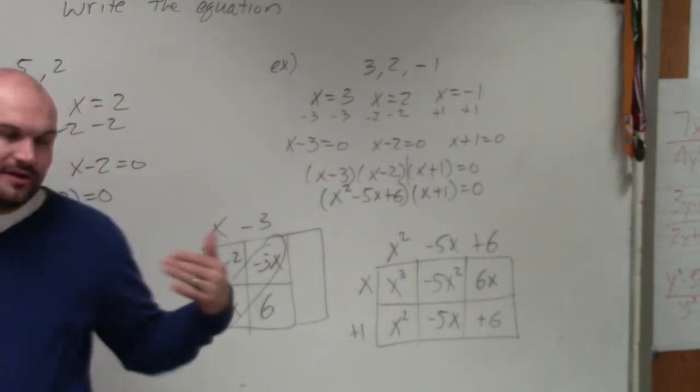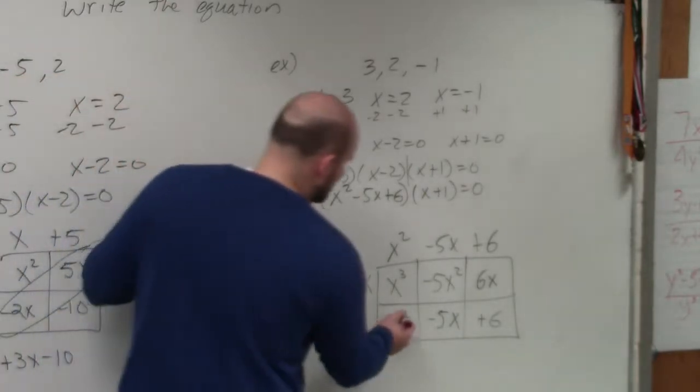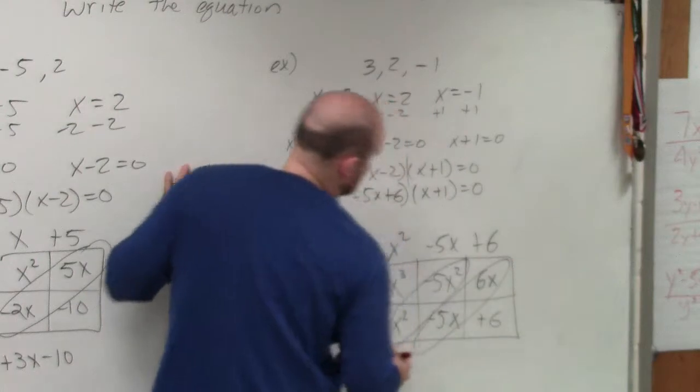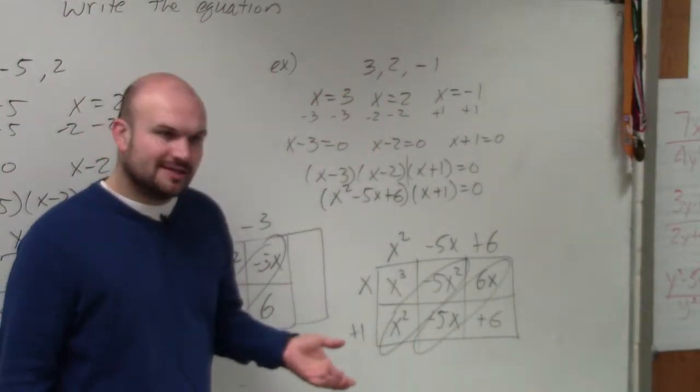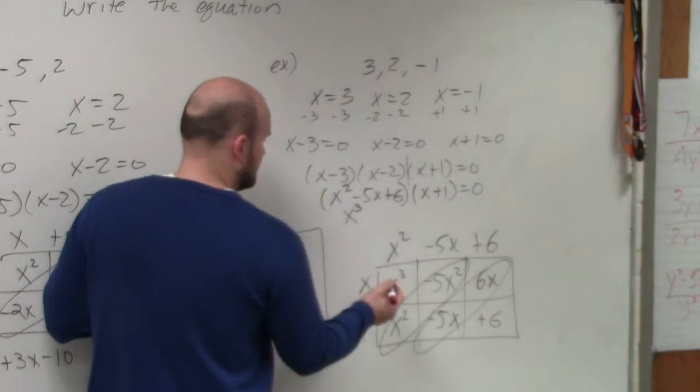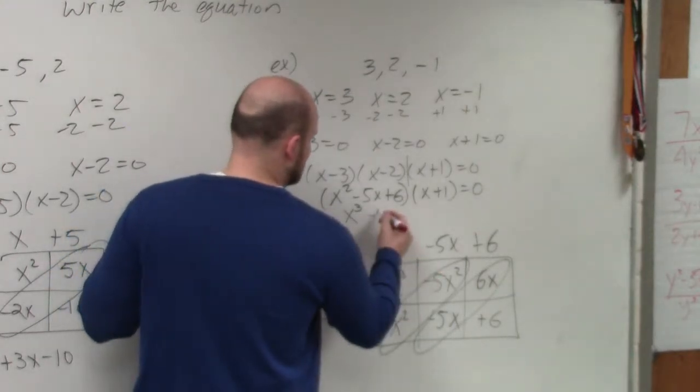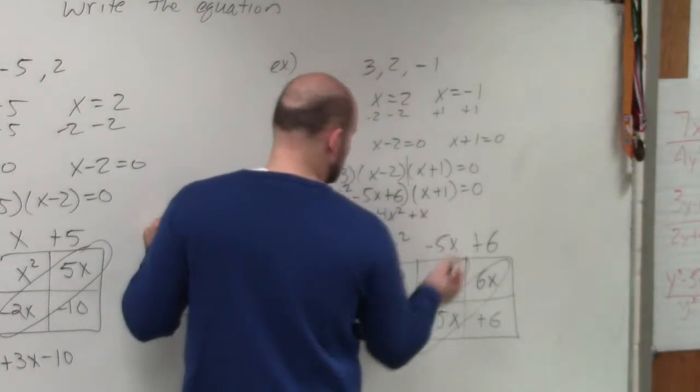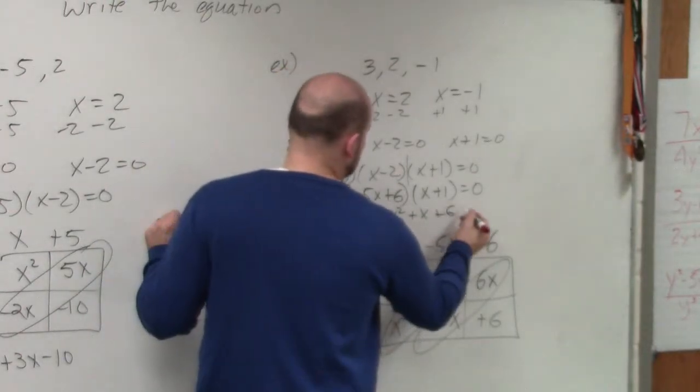Now again, the other reason why I like the box method is you guys can see that your diagonals, you can combine them. They're like terms. So the first thing I have is x cubed minus 4x squared plus x plus 6 equals 0.